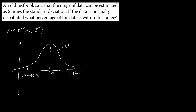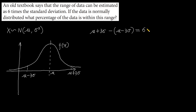So the data should be in the range from the mean minus three times the standard deviation to the mean plus three times the standard deviation. The top limit, mu plus three times the standard deviation, minus the bottom limit, mu minus three times the standard deviation, equals six times the standard deviation.